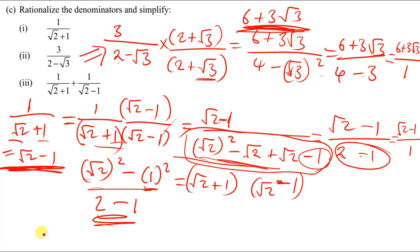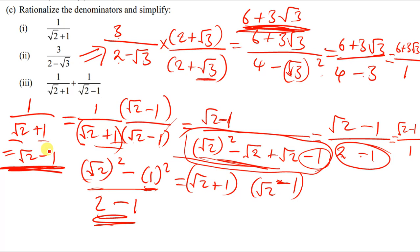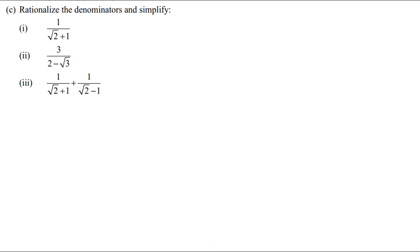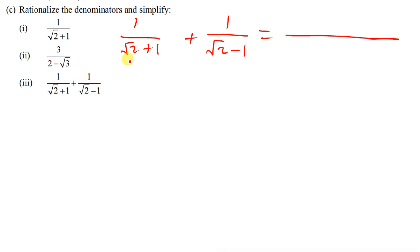Let me solve the next question. For this one, the first thing you need to do is simplify the expression and write it as a single fraction. We have 1 over root 2 plus 1, plus 1 over root 2 minus 1. I'll find the common denominator, which is root 2 plus 1 times root 2 minus 1.